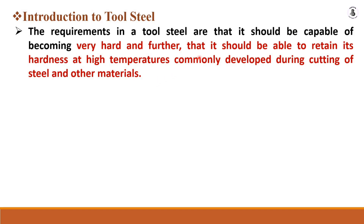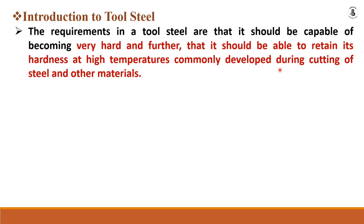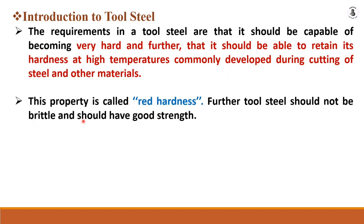The tool steel should be able to retain its hardness at higher temperatures commonly developed during the cutting operations of steels and many other materials. This property is called red hardness — hardness present at elevated temperatures. This is the essential condition for any tool steel material.